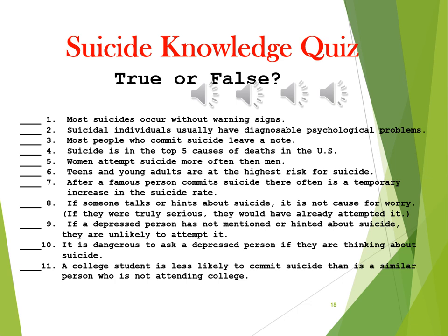If a person talks about or hints about suicide, that's not a cause for worry because if they were serious, they would have already attempted it — hopefully that screams 'false' at you. On the flip side, if the person is depressed and has not mentioned or hinted about it, you should not worry — that is also false. Basically, if you find yourself worrying that somebody you know might be suicidal, chances are you're picking up warning signs and you should be worried.